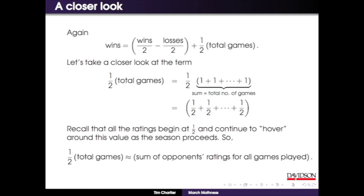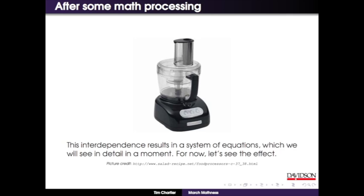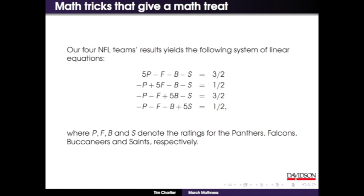What I've derived now is: wins is approximately equal to wins-over-two minus losses-over-two plus the sum of the opponent's ratings for all games played. Do you remember? We started with winning percentage, then did Colley's Laplace's rule of succession - a one in the numerator and two in the denominator. But now I've got this new term to substitute. Let's see how this all comes out - it creates a linear system.